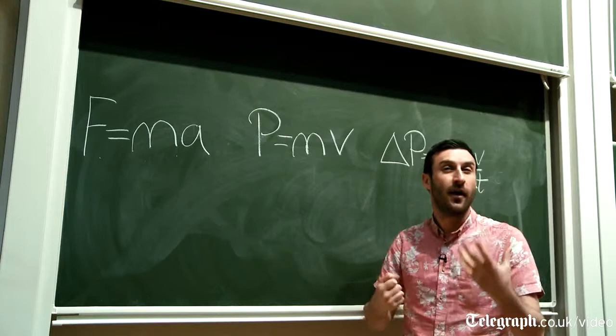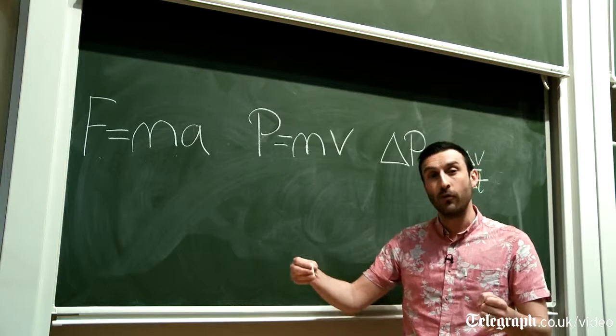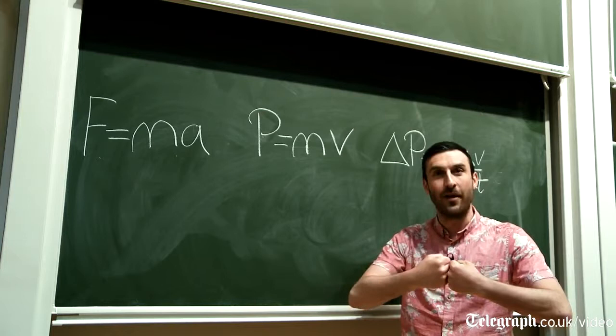A way that you might be familiar with is in snooker. You've got the white cue ball comes along, it hits the red ball, the cue ball stops moving, and it transfers momentum to the red ball, and that moves off.